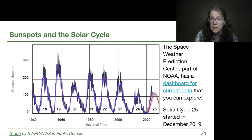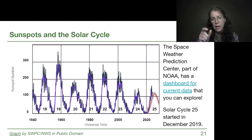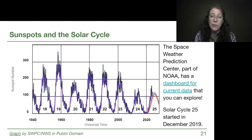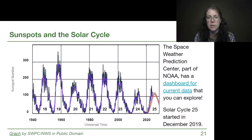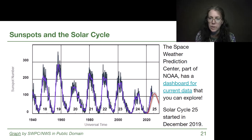If we look closely at the dataset, it seems like it's about every 10 years — in fact 11 years when we look closely and average over all the different cycles, some of which have double peaks, some of which don't, some higher than others. But it's an 11-year cycle.